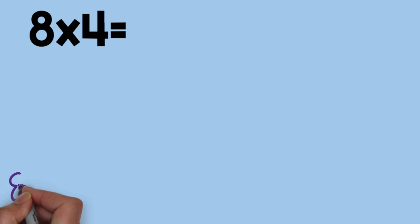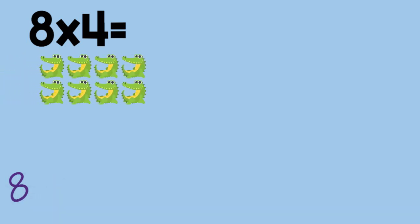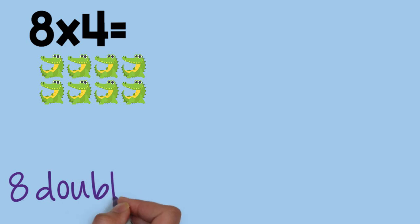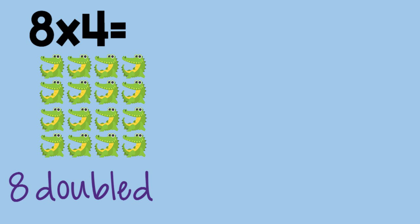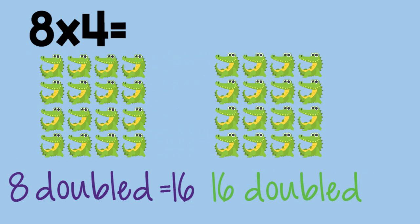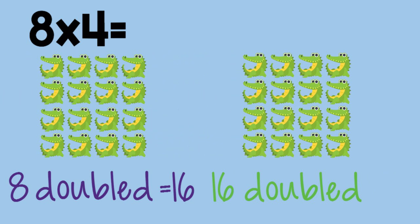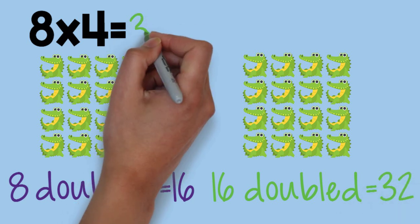Eight times four. Eight plus eight equals sixteen. Sixteen plus sixteen equals thirty-two. So eight times four equals thirty-two.